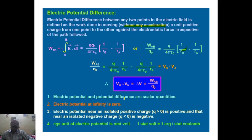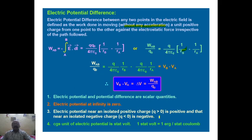Electric potential and potential difference are both scalar quantities. Electric potential at infinity is zero. Electric potential near an isolated positive charge is positive, and near an isolated negative charge it is negative. The CGS unit of electric potential is the stat-volt; one volt equals one erg per stat-coulomb.